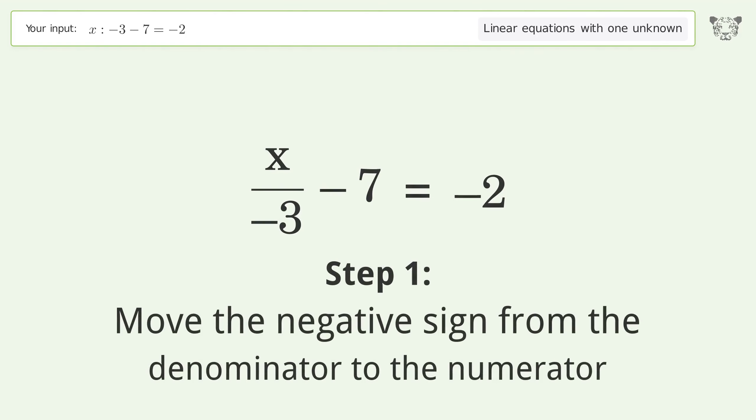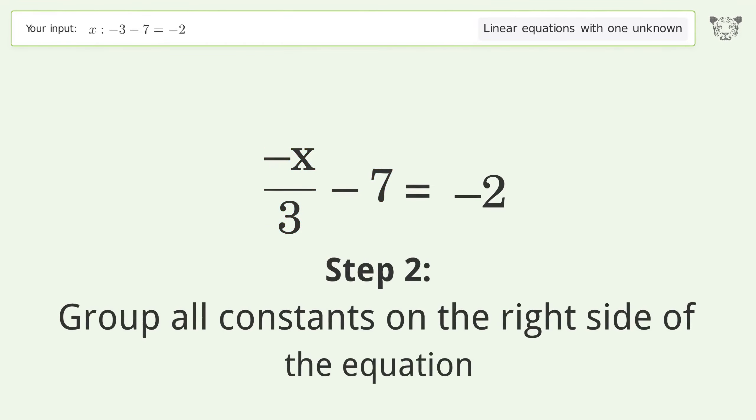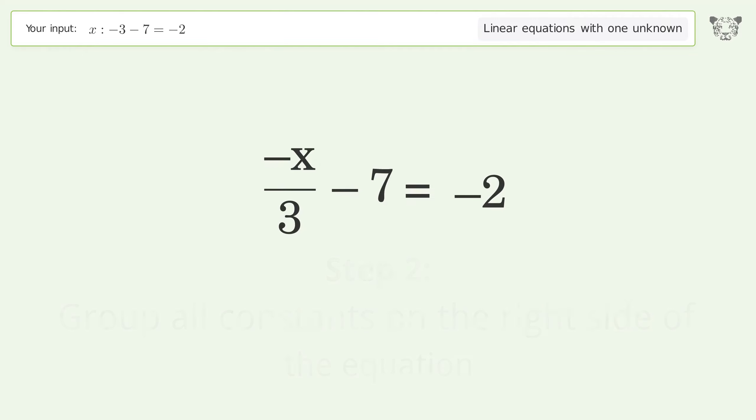Move the negative sign from the denominator to the numerator. Group all constants on the right side of the equation. Add 7 to both sides. Simplify the arithmetic.